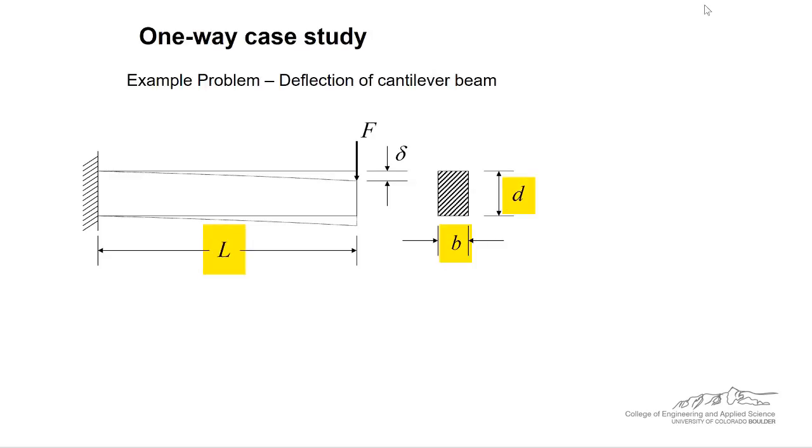Now obviously different materials are going to have different mechanical properties. So if you had something that was soft or something that is very stiff then the deflection given these different variables is going to be quite different.